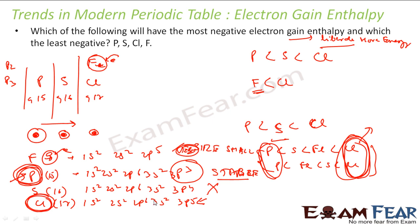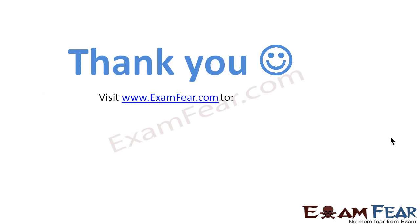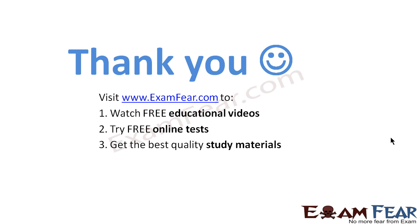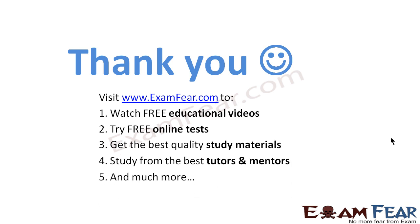So you have either way of solving: you can write the electronic configuration and determine whether adding an electron is favorable or not, or you can arrange the elements in periods and groups and find which will have the most negative and which will have the least negative electron gain enthalpy. Thank you. Visit examfear.com to watch free educational videos, try free online tests, get the best quality study materials, and learn from the best tutors and mentors. Thanks once again.